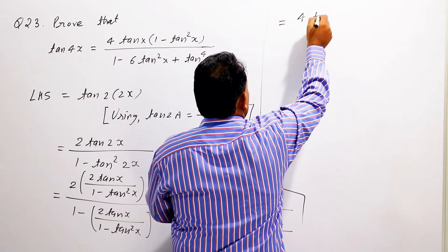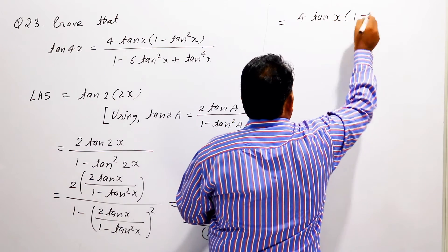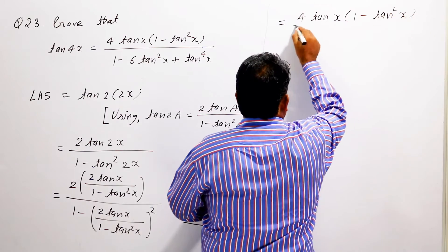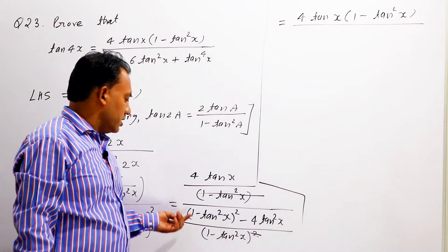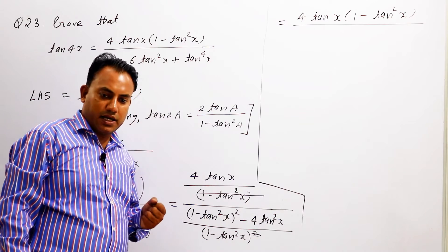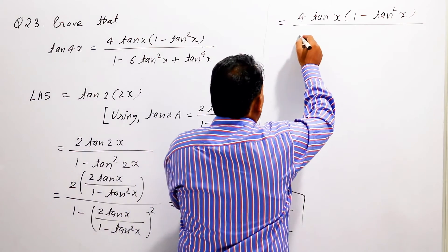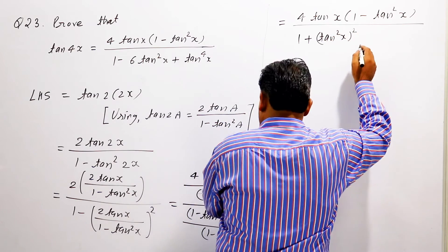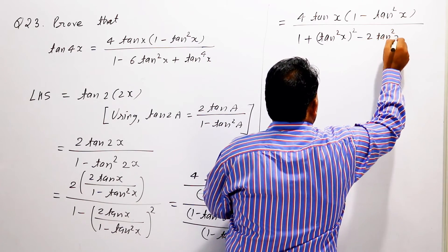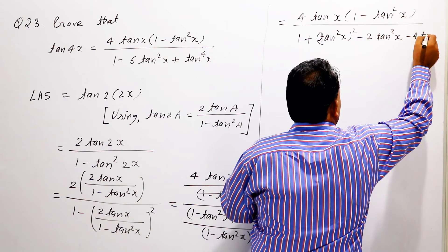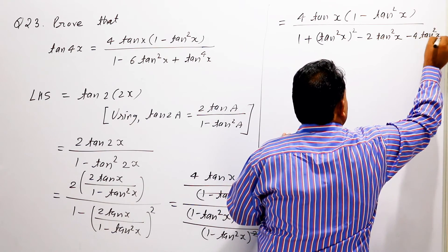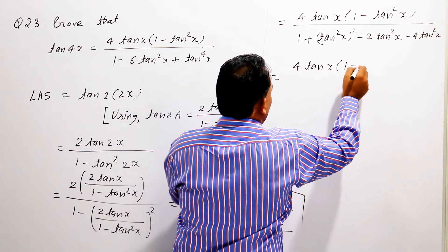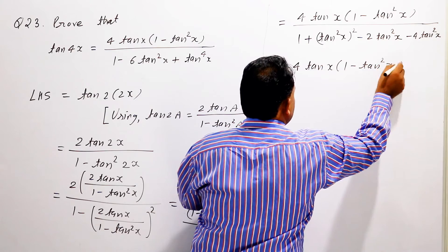तो इससे आप ऐसे लिख पाएंगे: is equal to 4 tan x (1 minus tan² x) upon — यहां लगाएंगे a minus b का whole square। ठीक है, तो हो जाएगा: 1 plus tan square x की whole power 2 minus 2 tan square x minus 4 tan square x.